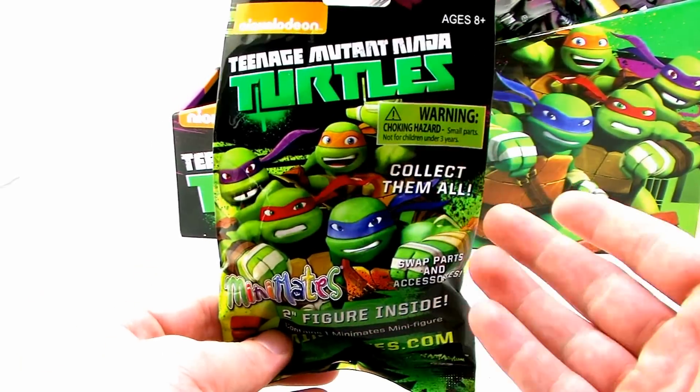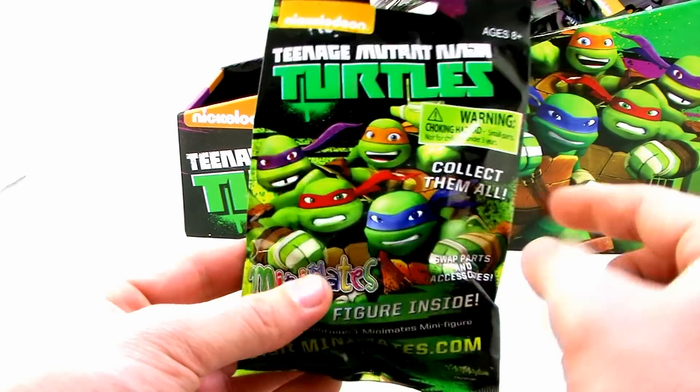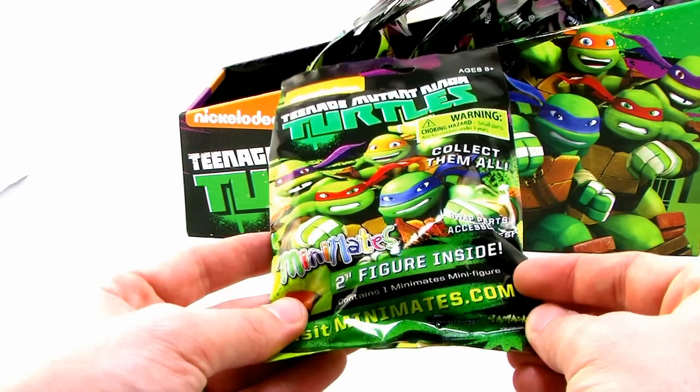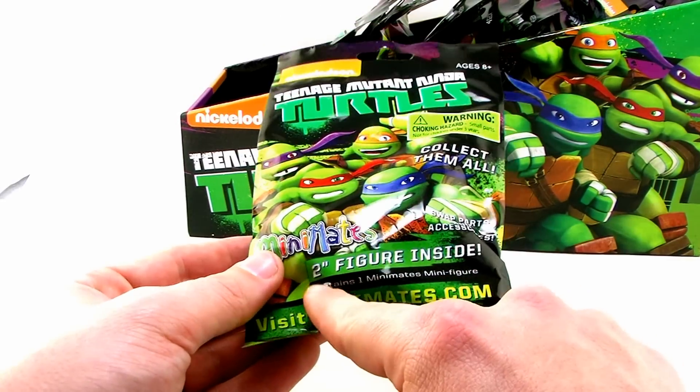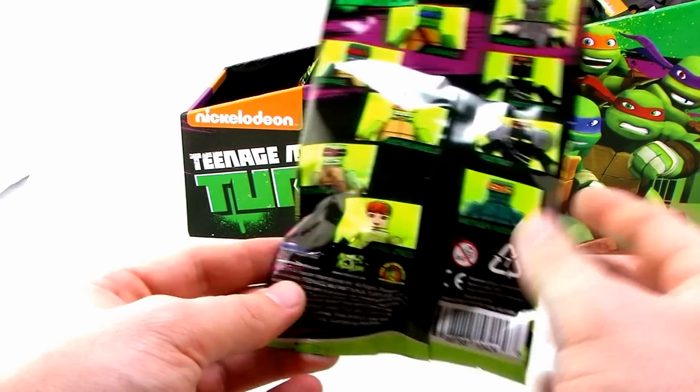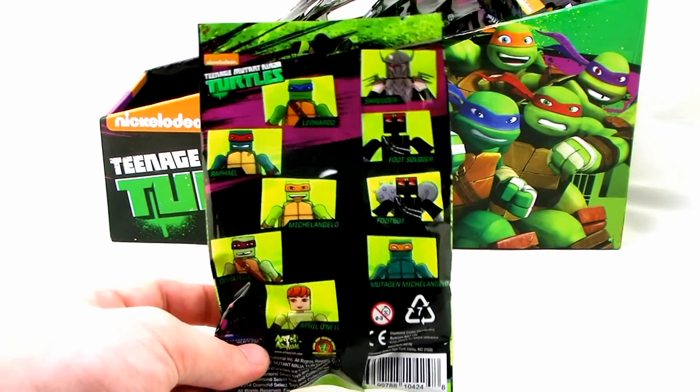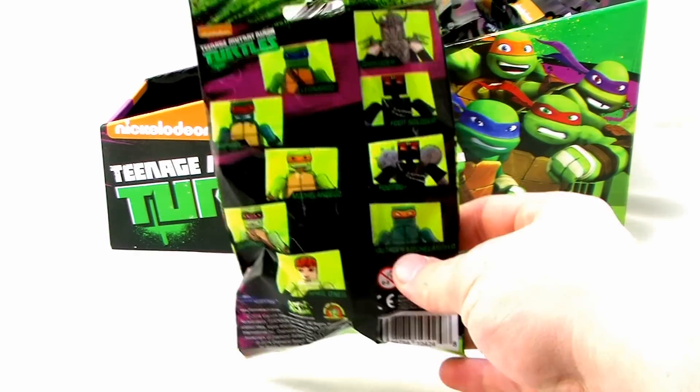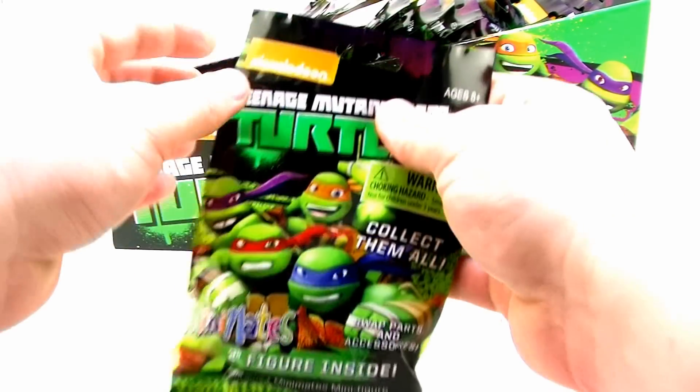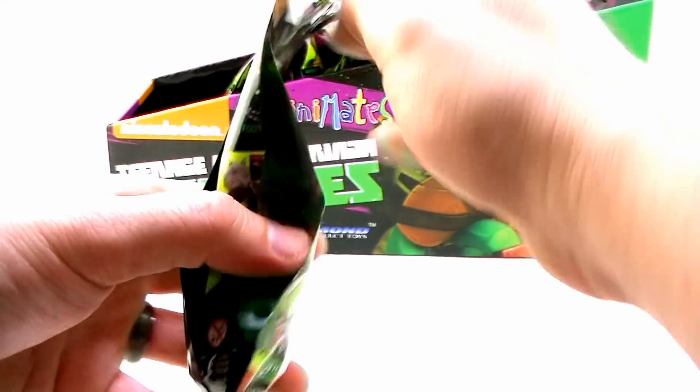So first things first, packaging, gorgeous on these. You can tell they're just kind of those standard foil type blind bags there. And it's got bright and colorful images of the four Turtles right there on the front from the new Nick Turtles cartoon series. Also let you know that there is a two inch figure inside, contains one Mini Mates mini figure. So what are we waiting for? Why don't we go ahead and start ripping these bags open and see who we get on the inside. Got a nice little tear tab on there, which is always appreciated. So here we go. Our first Mini Mates bag.